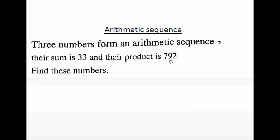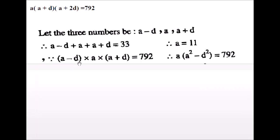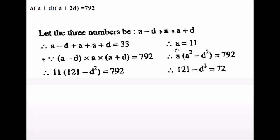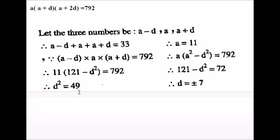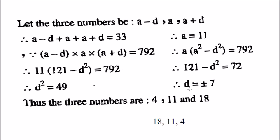The product of the three numbers is 792. Multiply the three numbers: A minus D times A times A plus D equals 792. A minus D times A plus D gives the difference of two squares, so this is equal to A squared minus D squared, times A, equals 792. A is already known and equals 11. So 11 times 11 squared minus D squared equals 792. Simplify — so D squared is 49. Therefore D equals plus or minus 7.